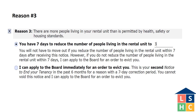If this is the second N5 you are giving your tenant within six months, shade in the second circle. This notifies the tenant that they cannot void the notice and that you can file with the Landlord and Tenant Board right away. Shading in both circles or failing to shade either will result in you having to start over and serve a new notice.